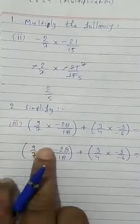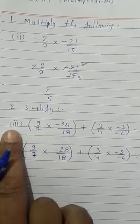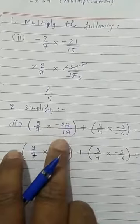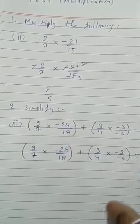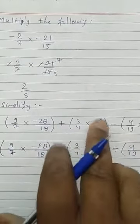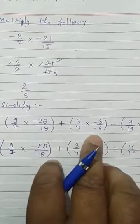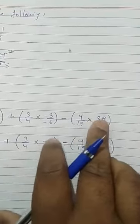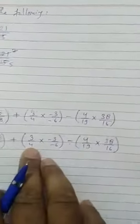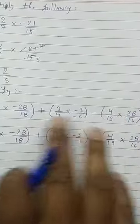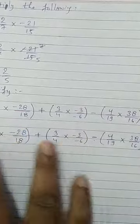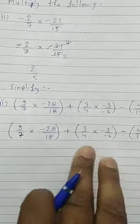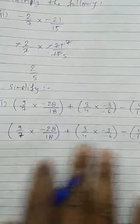Next is simplify. I have taken third part. 9 upon 7 multiply by minus 28 upon 18 plus second bracket 3 upon 4 multiply by minus 3 upon minus 6 bracket close minus 4 upon 19 multiply by 38 upon 16. Because we have to show the question clearly, so I have written this expression again. I will start deduction on the second step.